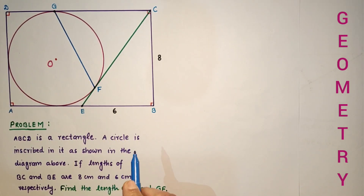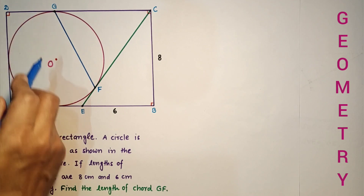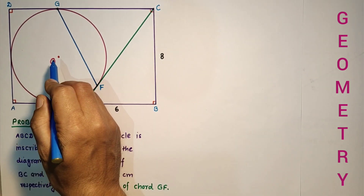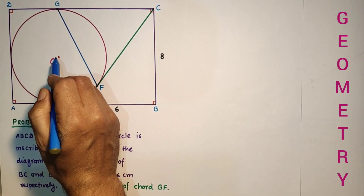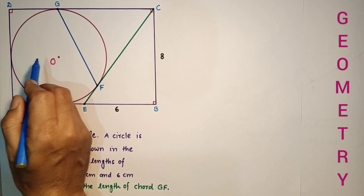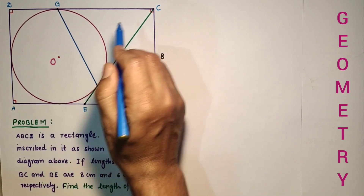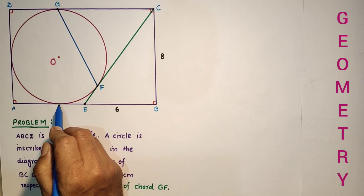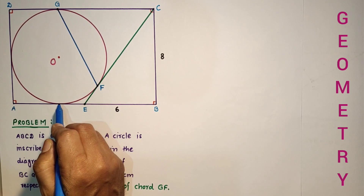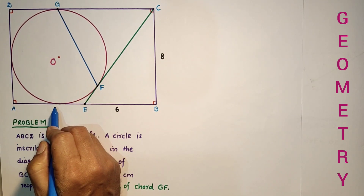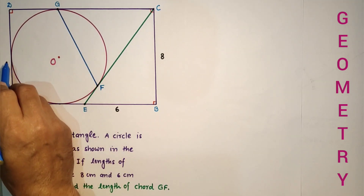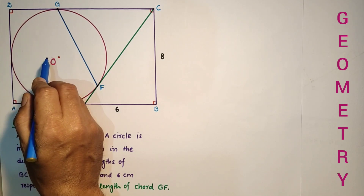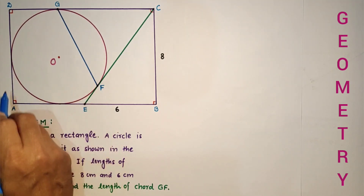If the length of BC is 8 and BE is 6 cm, then we have to find the length of chord GF. Join this contact point to the center, and this point of contact to the center, and from O to C. As we know, the radius and tangent at the point of contact are perpendicular, so all three angles are 90°, hence it will be a square.